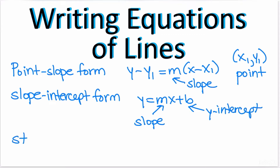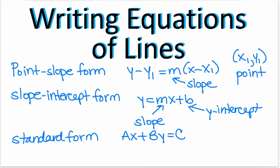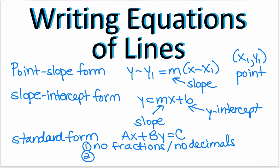Then we have standard form: ax plus by is equal to c. There are three requirements for standard form. Requirement one: there can be no fractions or decimals. Requirement two: the x must be positive — the number in front of x has to be positive. Requirement three: it must be in the form ax plus by equals c, where x and y are together on one side of the equal sign and the number is by itself on the other side.